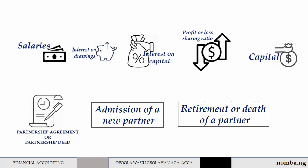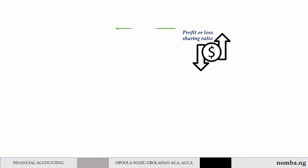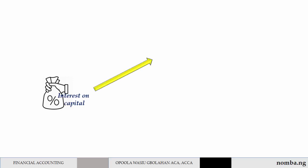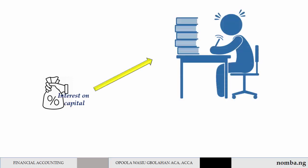As the profit or loss sharing ratio is not based on the capital contributed by each partner, it is reasonable to pay interest on capital out of the partnership profit to partners who have made extra investment and equally put the same level of work into the partnership as other partners.